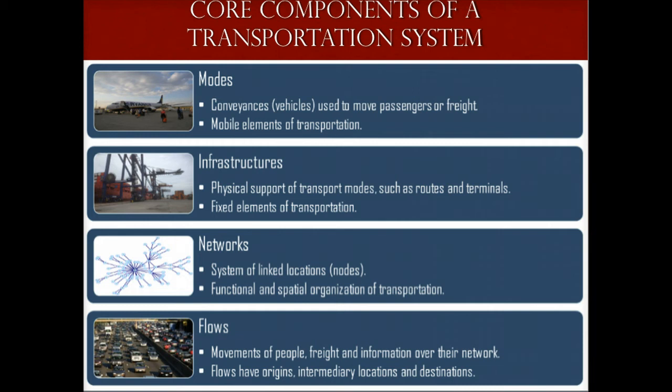Networks are a system of linked locations that are used to represent the functional and spatial organization of transportation. They indicate which locations are serviced and how they are serviced. Within a network, some locations are more accessible and have more connections than others that have less connections. Flows are the movements of people, freight, fuel, and information over their respective networks. Flows have origins, intermediary locations, and destinations. An intermediary location is often required to go from one origin to a destination — for instance, flying from one airport to another may require a transit at a hub airport.